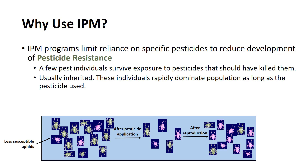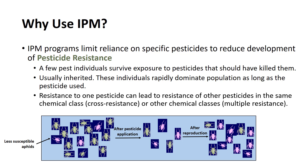Biological factors influence the development of resistance. Short-lived, rapidly developing pests with many offspring, limited mobility, and many generations per year, such as aphids or mites, are most likely to develop resistance rapidly. Resistance to one pesticide can lead to resistance to other pesticides in the same chemical class, called cross-resistance, or to other chemical classes, called multiple-resistance.